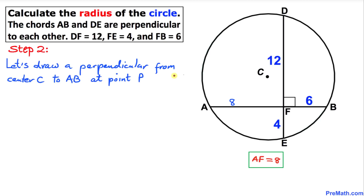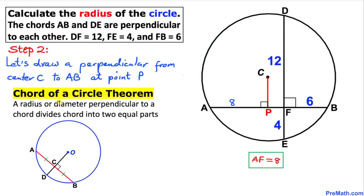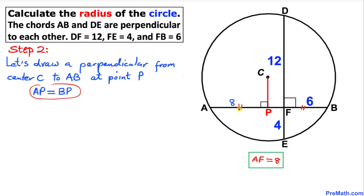In the next step, let's draw a perpendicular from the center C onto chord AB. We draw a perpendicular here and call this point P. By the chord of a circle theorem, a radius perpendicular to a chord divides the chord into two equal parts. So CP is our radius, and it divides chord AB such that AP equals PB.